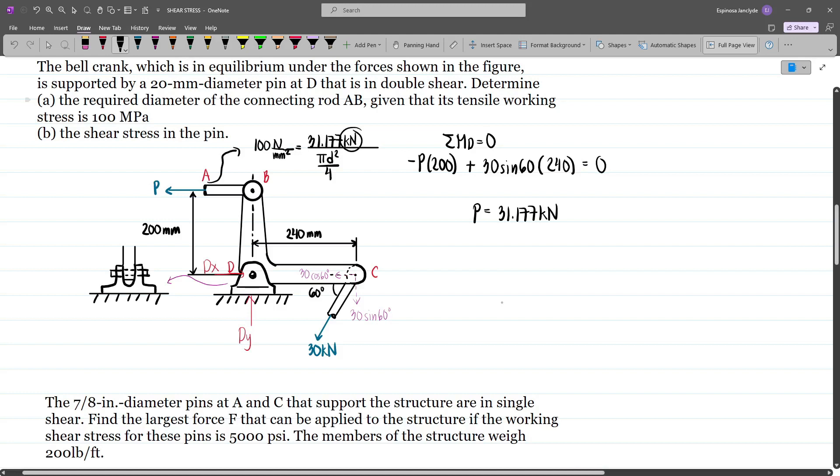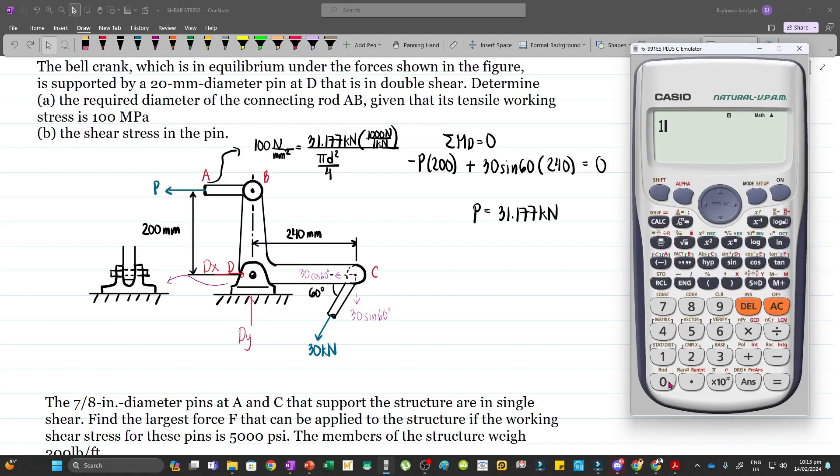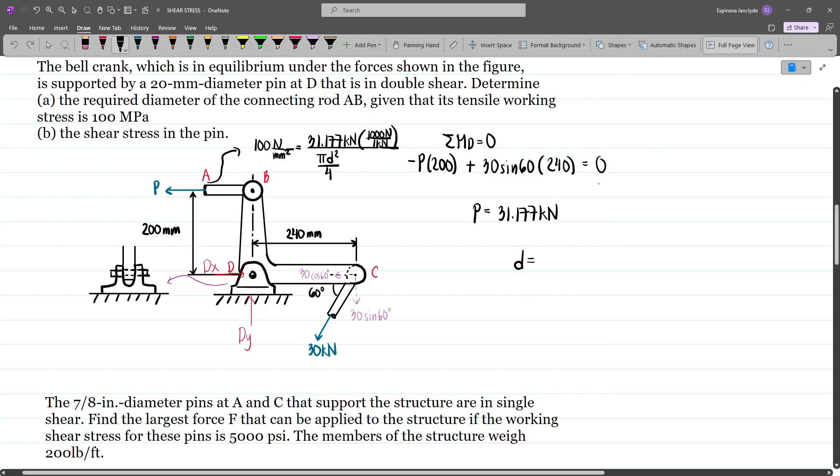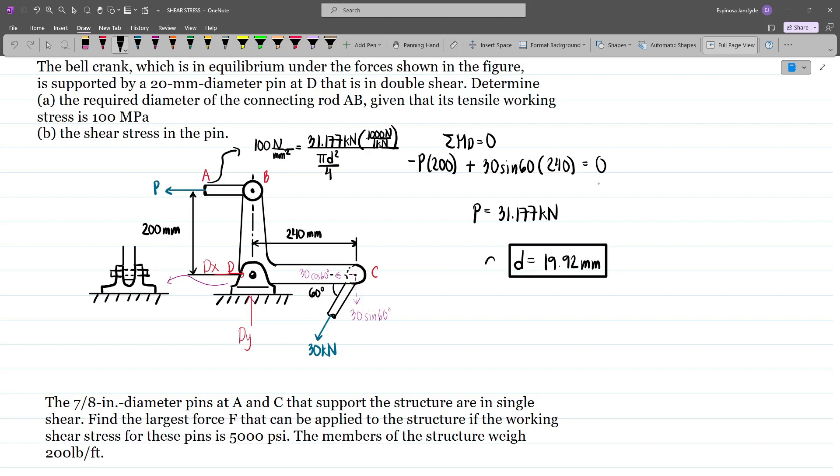However, we need to convert this into newtons, so multiply by 1000. Solving for d, we have 100 equals 31.177 times 1000 divided by π/4 times d². This gives us 19.92 mm. This is our answer for A.